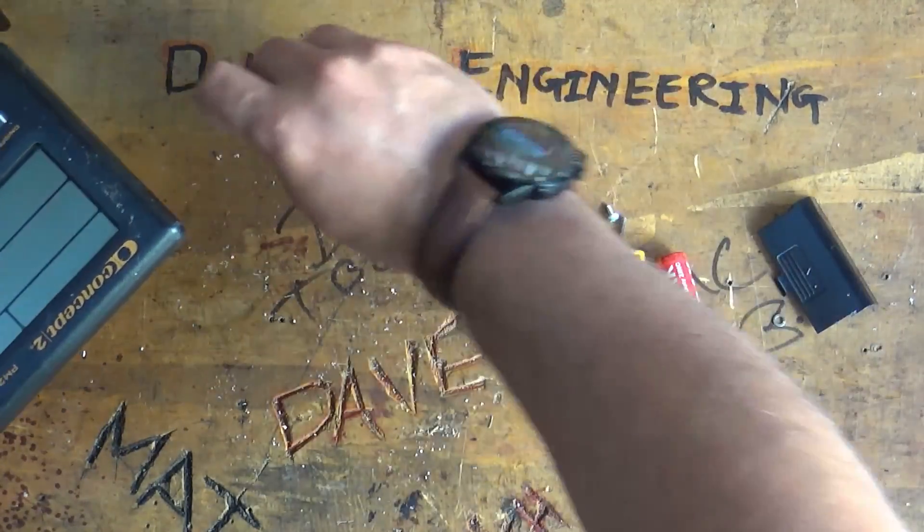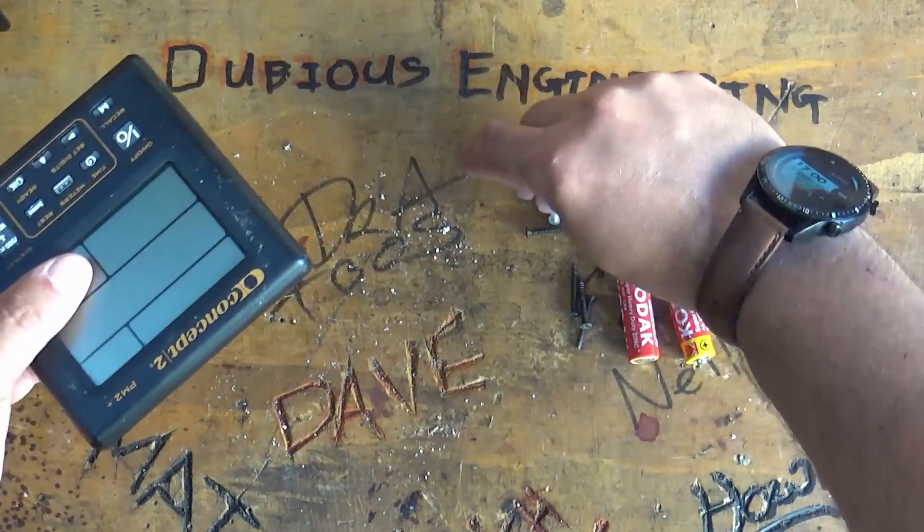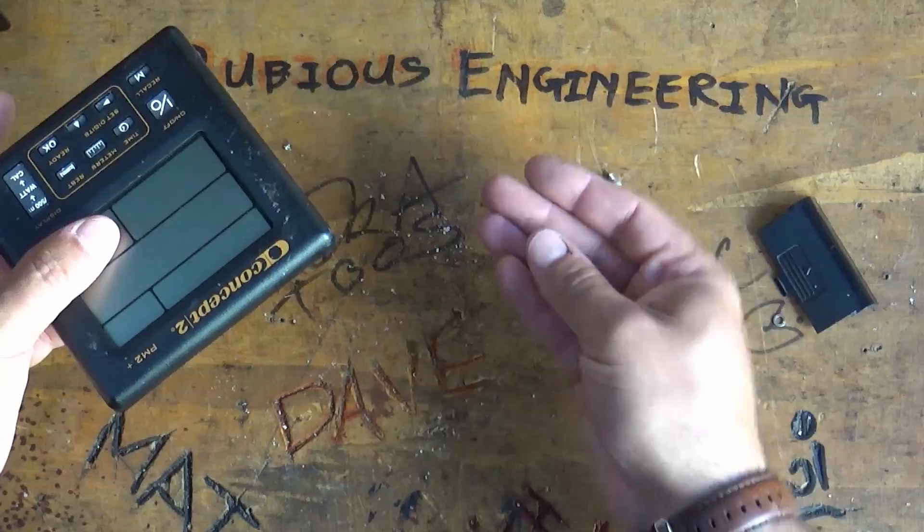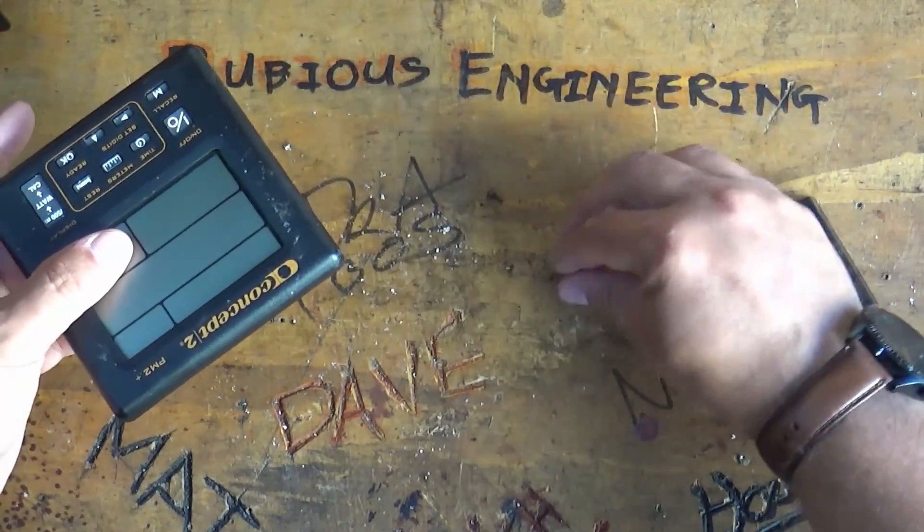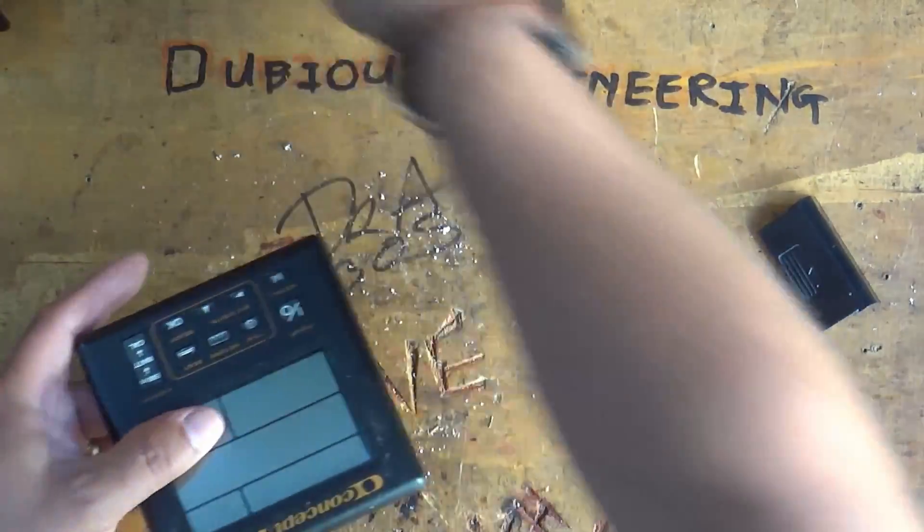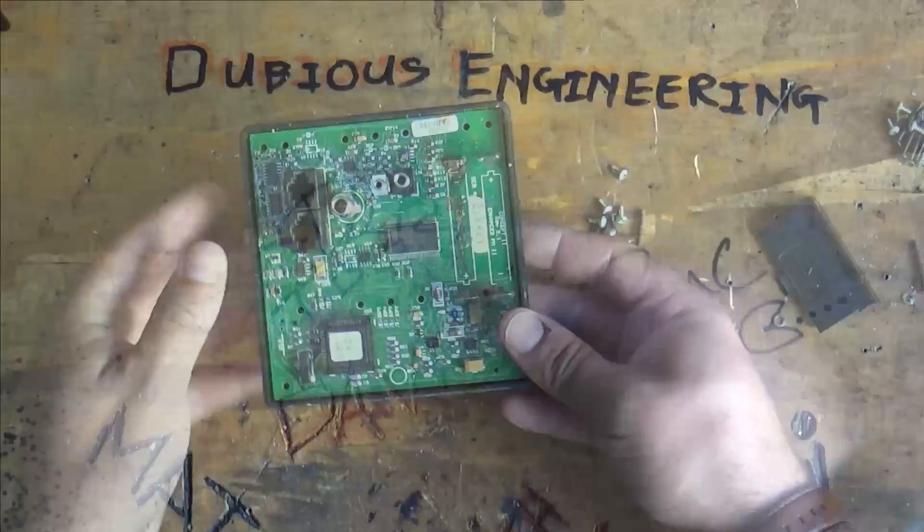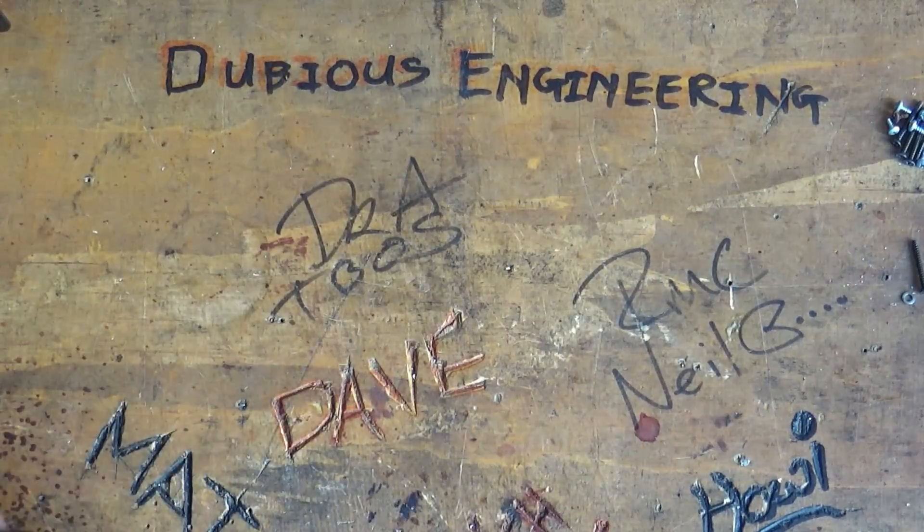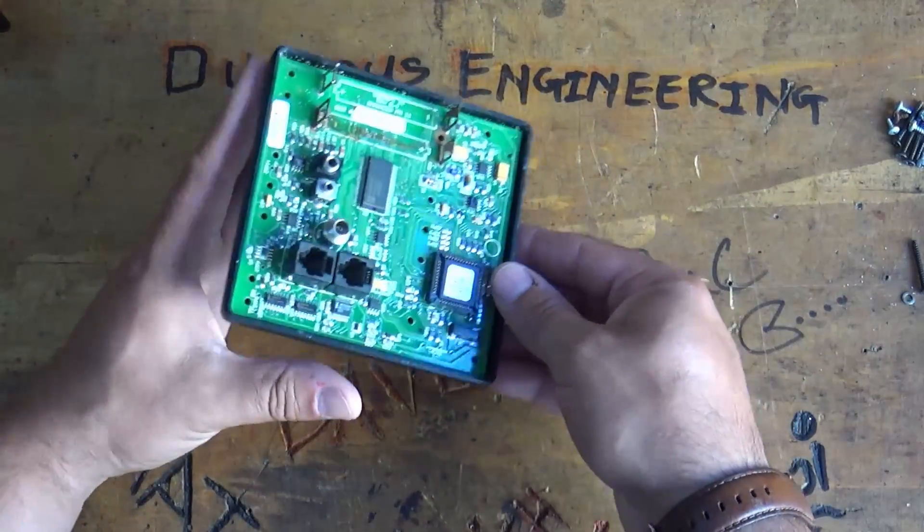Oh my goodness the amount of crystalline corrosion that seems to be falling out of this is incredible and one of those screws is completely rusted. Right okay so I've got a cleaner workbench now.